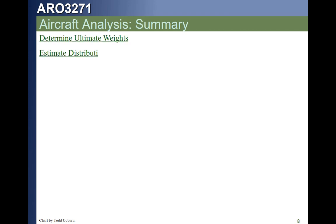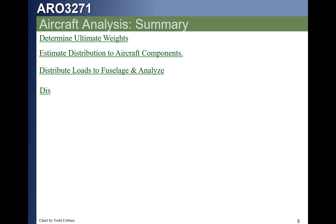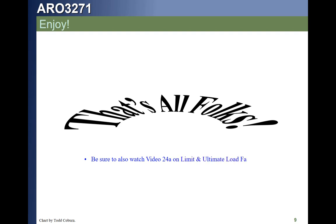To summarize, we determine our ultimate weights, load factors, and factors of safety. We then estimate the distribution of load to the components — fuselage and wings. We analyze those by computing the shear and moment diagrams and then doing detail analysis at any section cut. We'll look more at this kind of analysis in the next lecture. Make sure you watch video 24A on limit and ultimate load factors, and the rocket video from Aero 3261, video 22B. Links to all three videos are in your lecture posting on Blackboard.